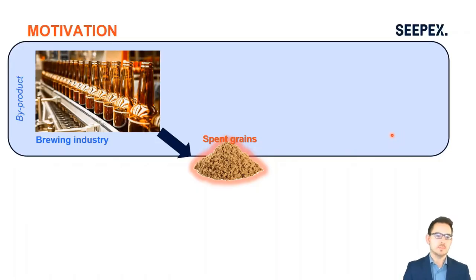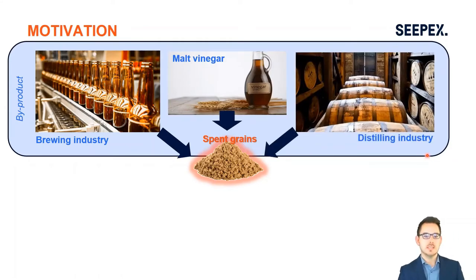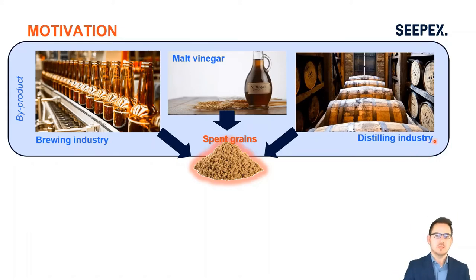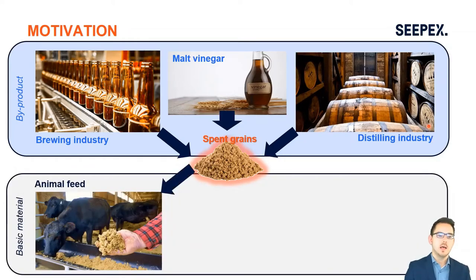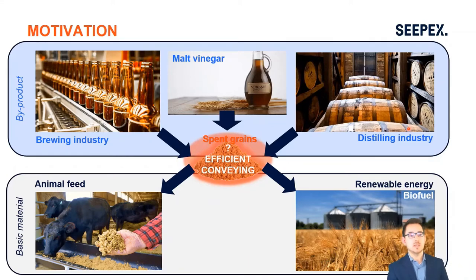Why is spent grain transportation so interesting? Because it occurs in many industries — the brewing industry, malt vinegar production, and the distilling industry — where spent grains are produced as a by-product. You want to get rid of this product quickly because once processed it goes further into animal feed production or into the renewable energy industry for biofuel production. Throughout all these steps, spent grain — which is highly aggressive and viscous — has to be conveyed efficiently.